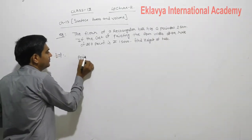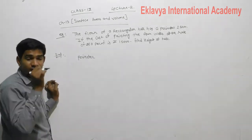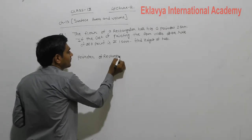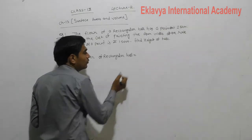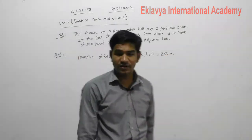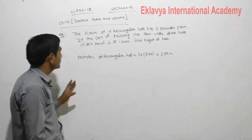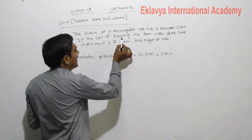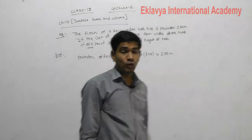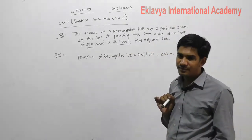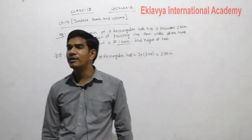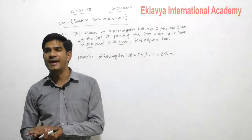Because we know that in a cuboid each face looks like a rectangle, the perimeter of the hall equals 2 multiplied by (L + B), whose value is given as 250. So the perimeter of the rectangle is 2 × (L + B). Given: the cost of painting the four walls at the rate of 10 rupees per meter square is 15,000. We paid 15,000 rupees total and the rate per meter square is 10 rupees.